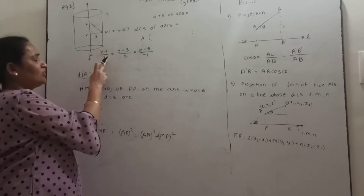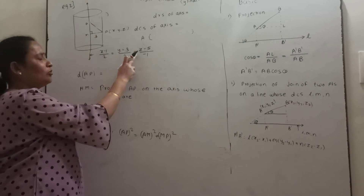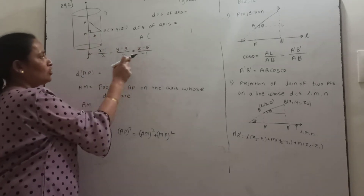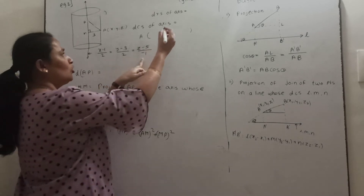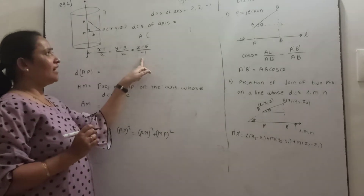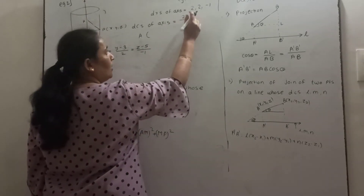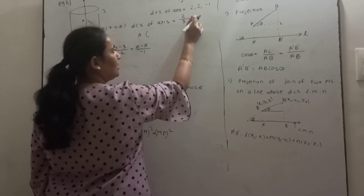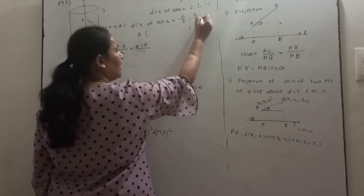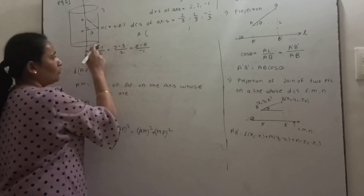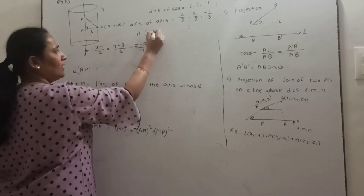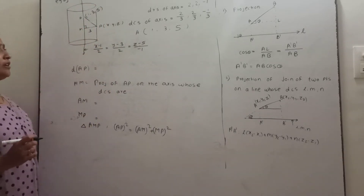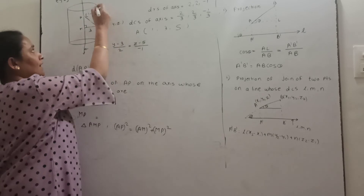For the second example, consider the axis (x − 1)/2 = (y − 3)/2 = (z − 5)/(−1) and radius 3. The direction ratios of the axis are 2, 2, −1. The direction cosines are 2/√(4 + 4 + 1) = 2/3, 2/3, −1/3, since √9 = 3. From the equation of the axis, one point on the axis is A(1, 3, 5).